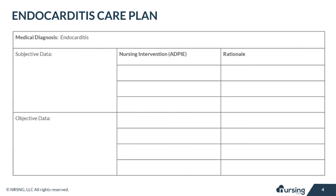Let's take a look at some of the subjective and objective data that your patient with endocarditis may present with. Subjective data is going to be things that are based on your patient's opinions or feelings. For endocarditis, these might include chest pain or symptoms of heart failure.